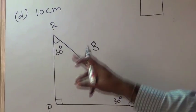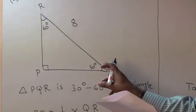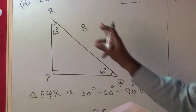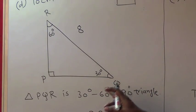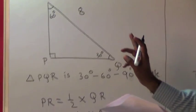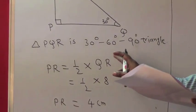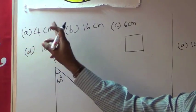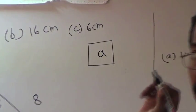The diagram shows triangle PQR with P = 90°, Q = 30°, R = 60°, and hypotenuse RQ = 8 cm. Triangle PQR is a 30-60-90 triangle, so by the 30-60-90 theorem, PR = ½ × QR = ½ × 8 = 4 cm. Alternative A represents 4 cm, so A is the correct alternative.